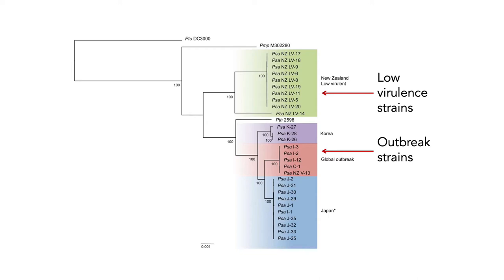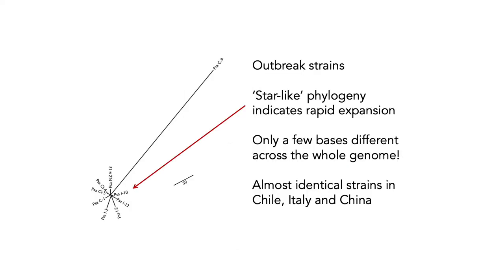By sequencing the genomes and lining them up in a phylogenetic tree showing the relationship between strains, you can see a whole lot of diversity. There are low-virulent strains in green, overseas strains from Korea in purple and Japan in blue, and the outbreak strain. Looking at the outbreak strain in detail, it shows a star-like phylogeny — that burst at the bottom looks like a star — which is a sign of very rapid expansion, incredibly characteristic of major outbreaks where a new strain comes in and spreads very rapidly, with all lineages only slightly different from each other.